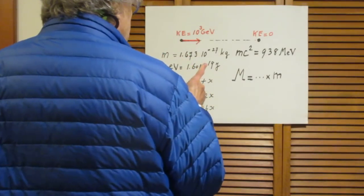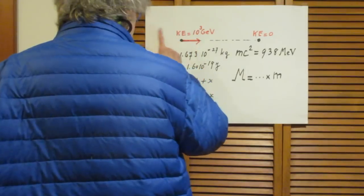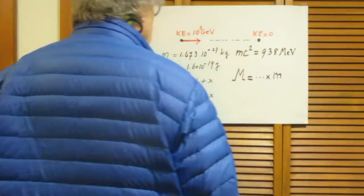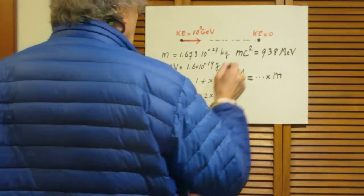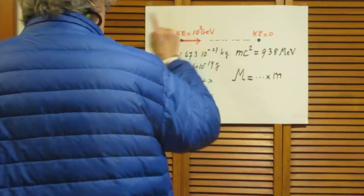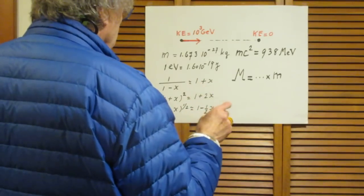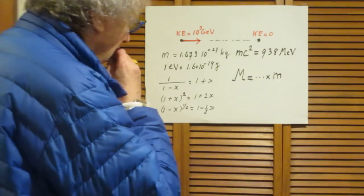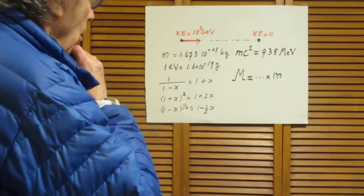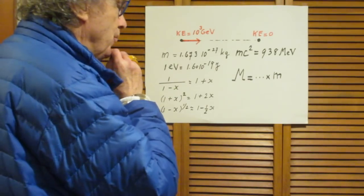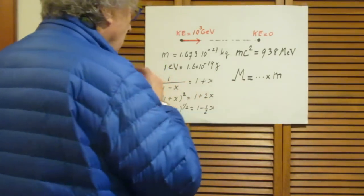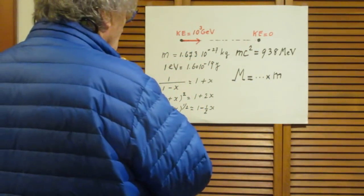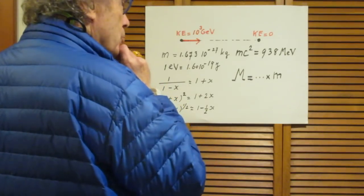In a nutshell, the question comes down to this: a 1000 GeV proton hits a stationary proton, they stick together and continue together. Some of the kinetic energy of this proton has been lost and that can be converted into the mass of a new particle. My question is: what is the maximum rest mass M of that new particle that can be produced in this experiment?